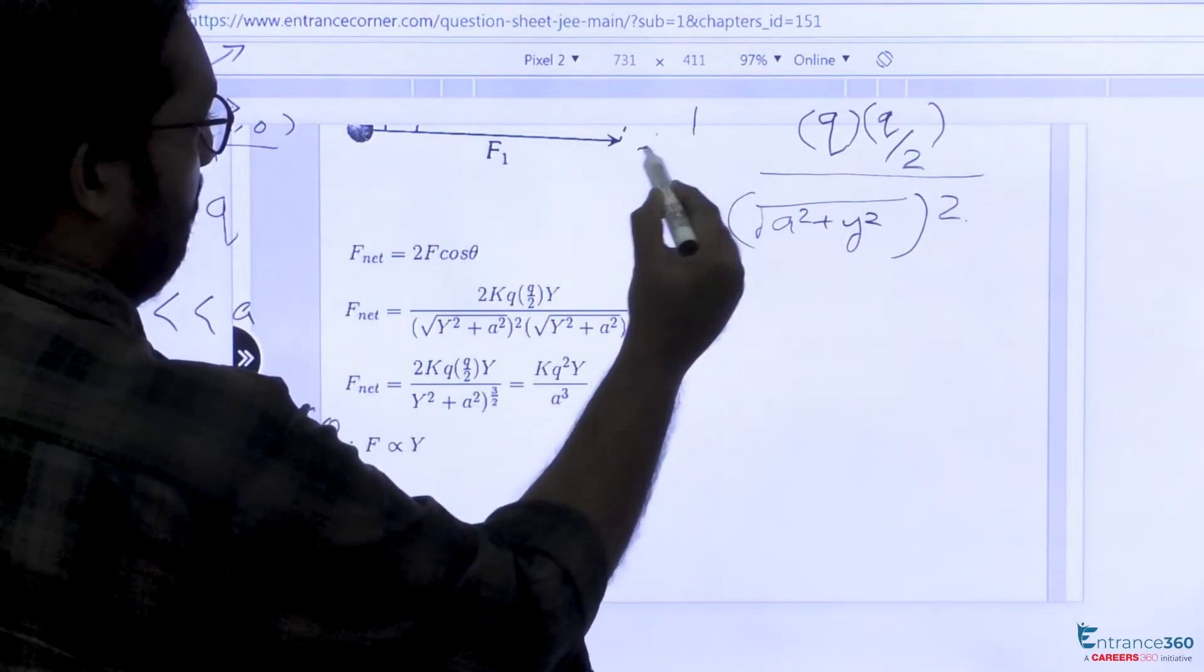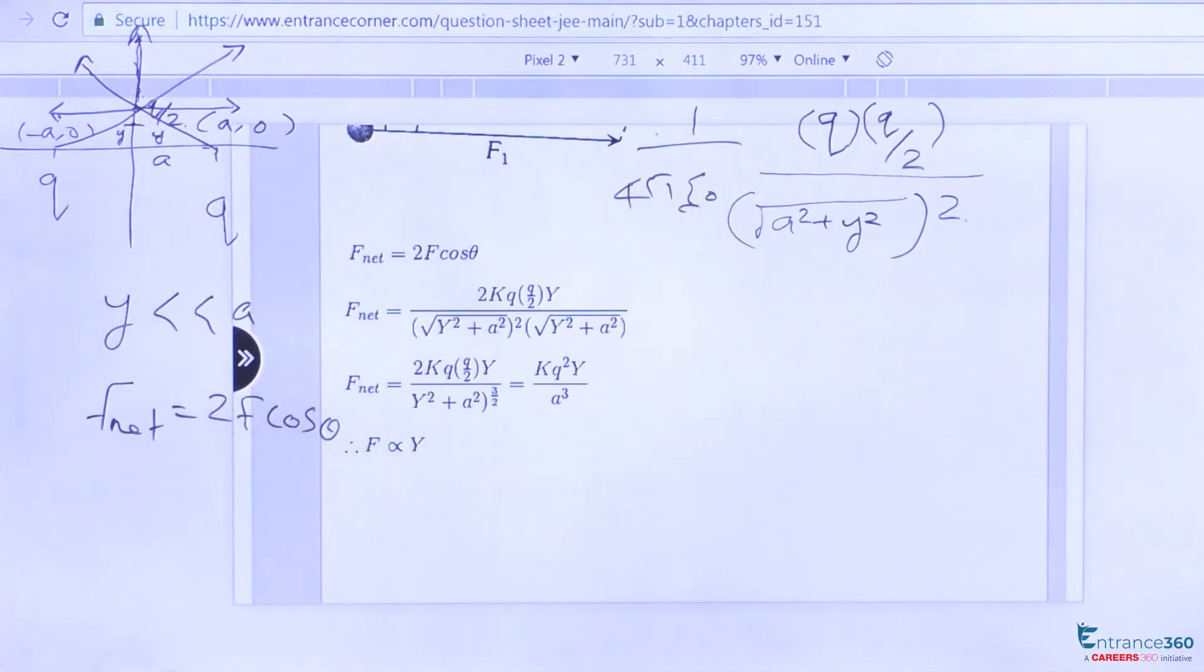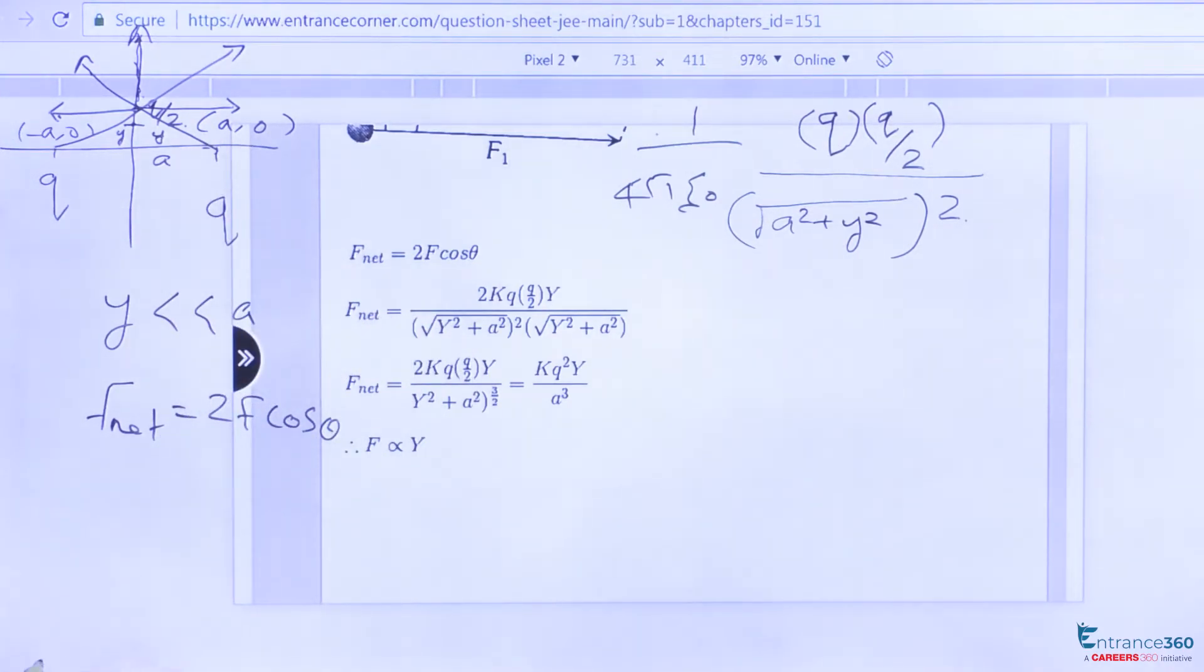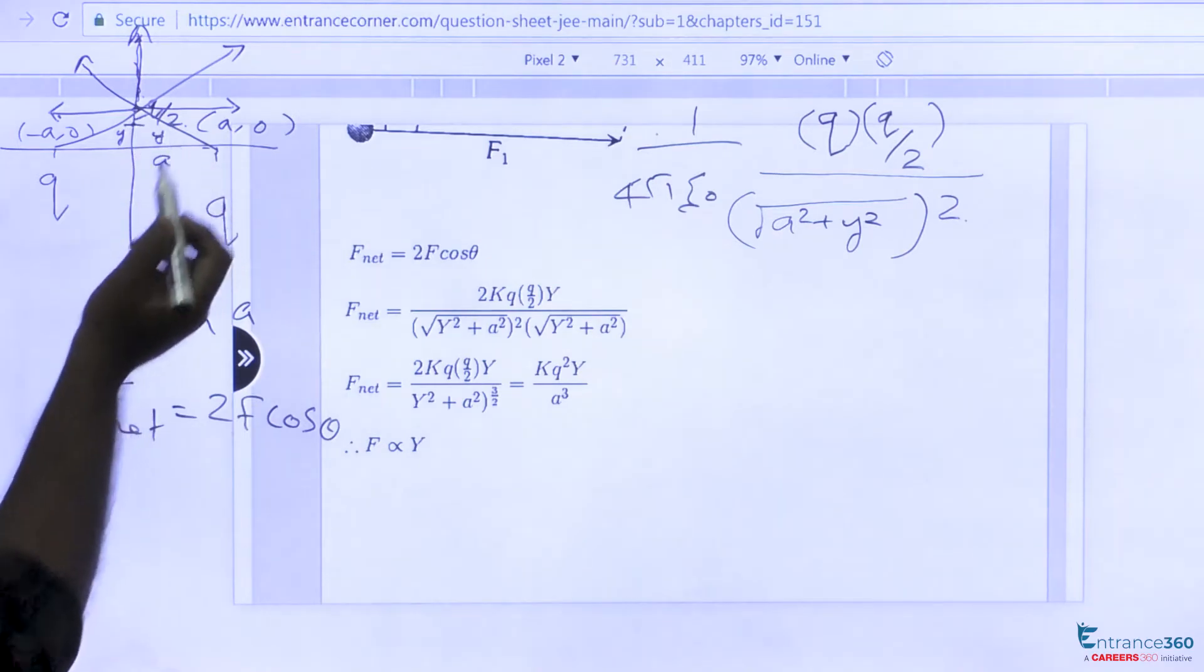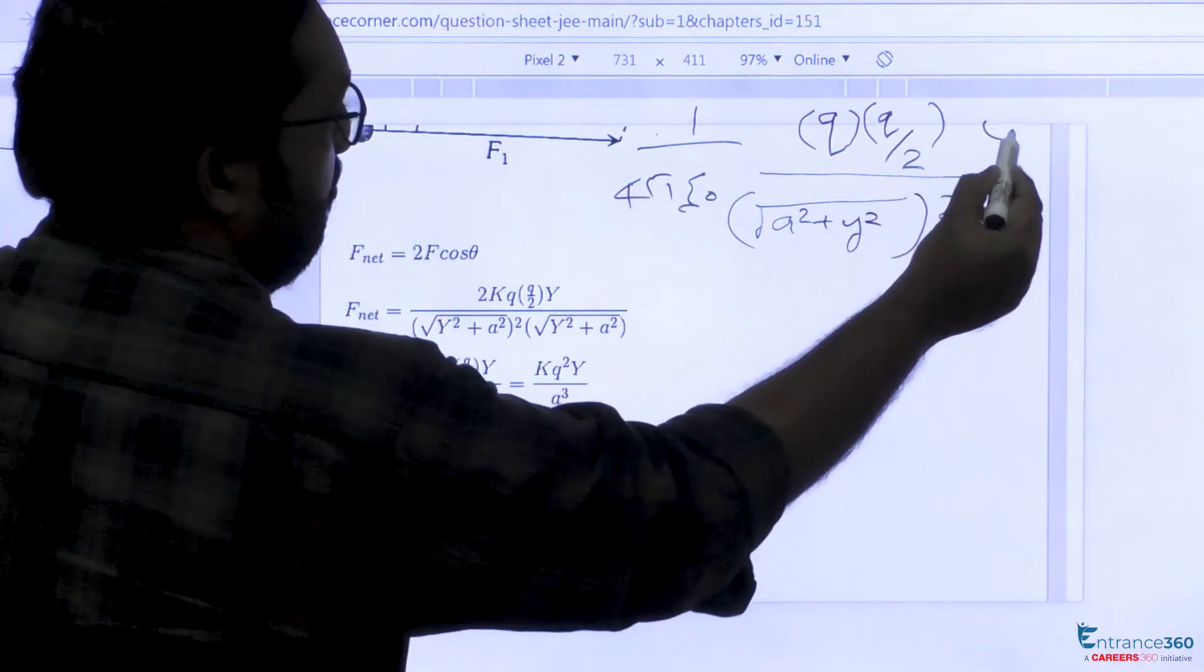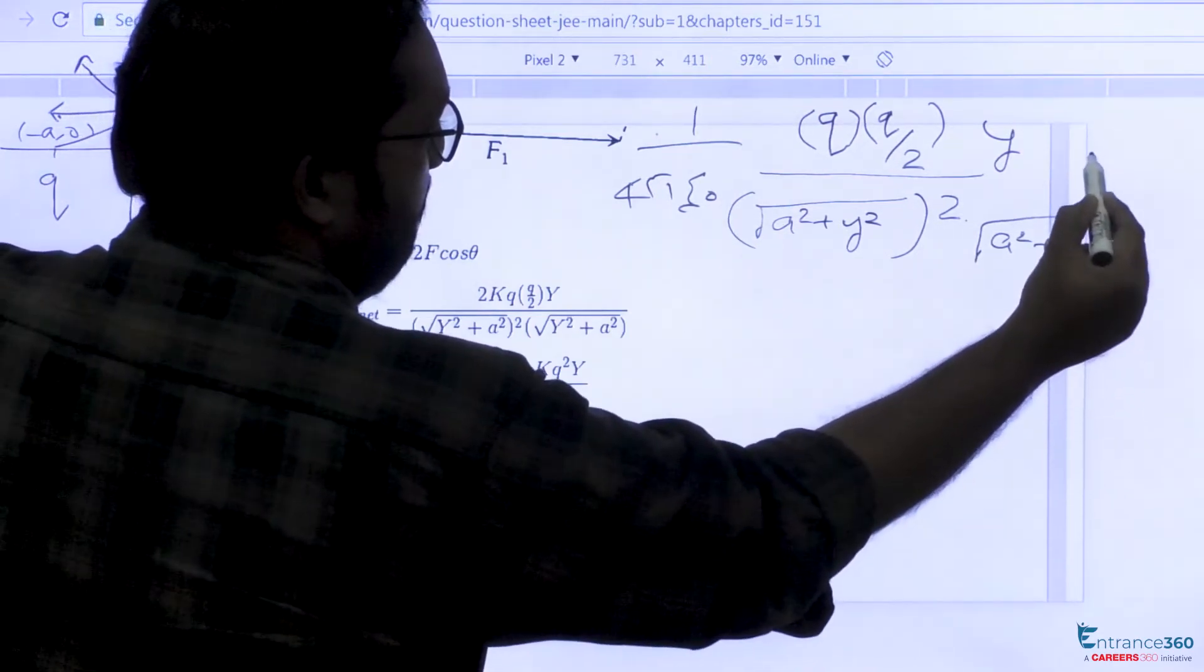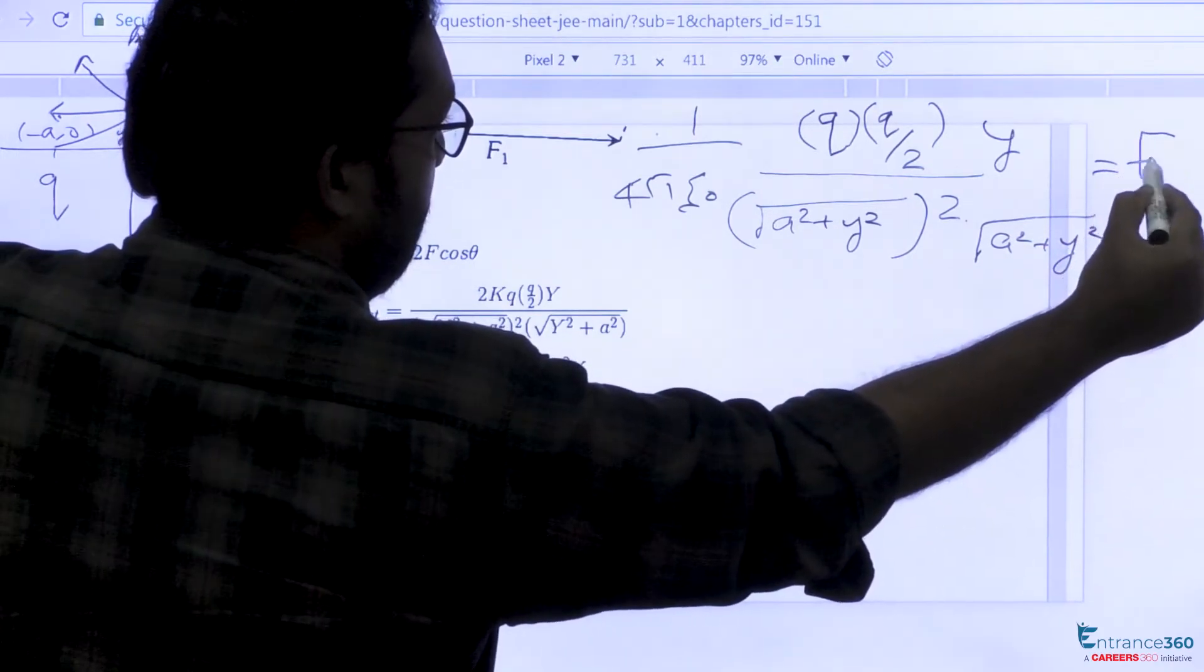The constant is 1/(4πε₀) times cos theta. What is cos theta here? Cos theta will be y/√(a² + y²), which gives us our required force.